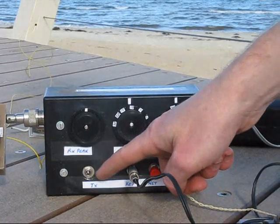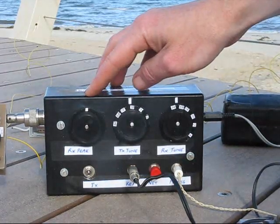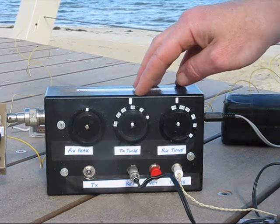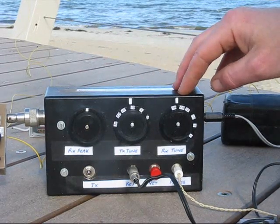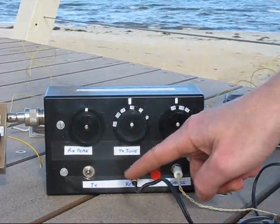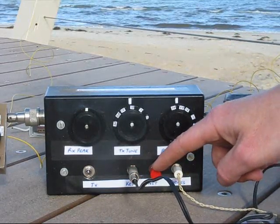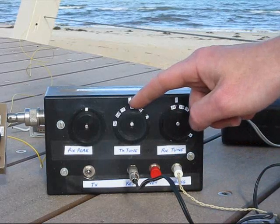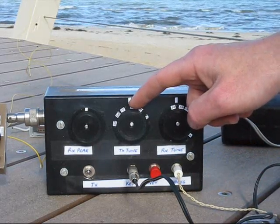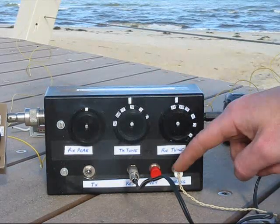On the front panel, the transmit receive switch, the receive front end peaking control, the transmit frequency adjust, the receive frequency adjust, the key socket, a netting control. You use that to zero beat incoming signals on the transmit frequency adjustment. That makes you zero beat and the earphone socket.